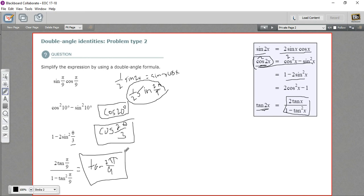So that is how to use double angle identities to simplify some trig expressions.